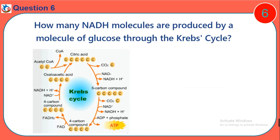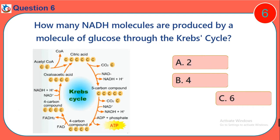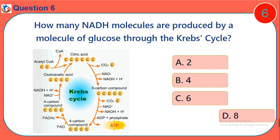Question 6. How many NADH molecules are produced by a molecule of glucose through the Krebs cycle? A. 2. B. 4. C. 6. D. 8.